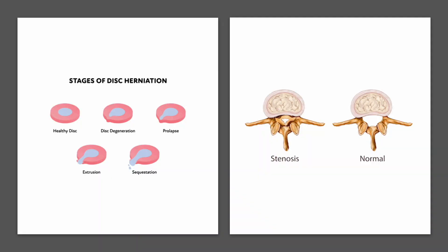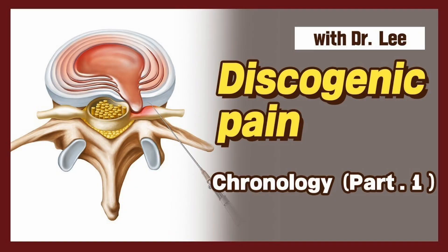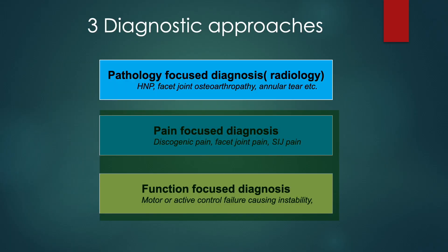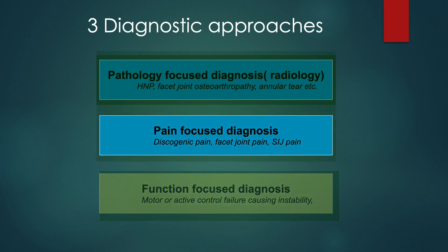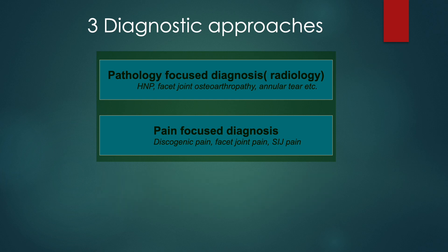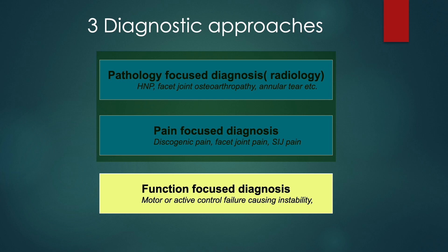In the past, we may make a hasty decision to blame disc herniation or spinal stenosis for the cause of chronic spinal pain. With the help of diagnostic blocks, we can currently extend the vision of diagnoses such as discogenic pain or facet joint pain. Traditional doctors seek the cause of pain in pathologies such as disc herniation and facet joint osteoarthritis. Current pain interventionists look for pain generators with diagnostic techniques, but most doctors haven't considered functional focus diagnosis. I want to talk more about functional focus diagnosis later.